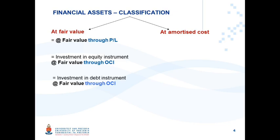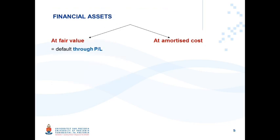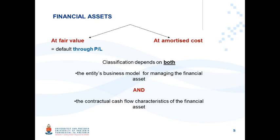Under these measurement bases, we identify four financial asset categories: at fair value through profit or loss; at fair value through OCI for an investment in an equity instrument; at fair value through OCI for an investment in a debt instrument; and at amortized cost. The classification of a financial asset depends on both the entity's business model for managing the financial asset and the contractual cash flow characteristics of the financial asset.